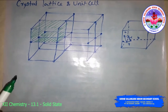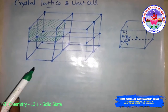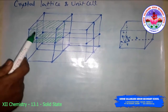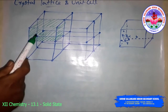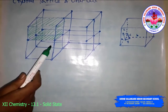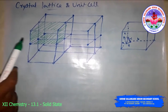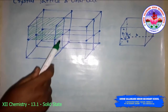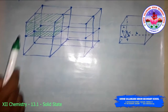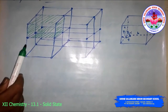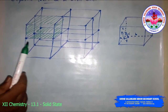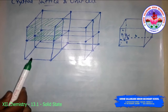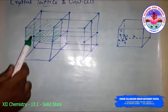The regular 3D arrangement of points in space forms a crystal lattice. This portion shown here is a 3-dimensional cubic lattice along with its unit cell.